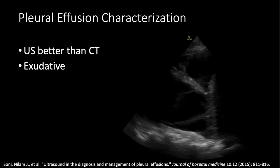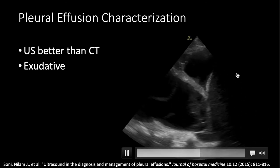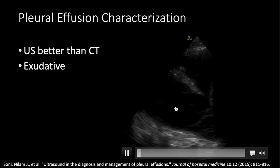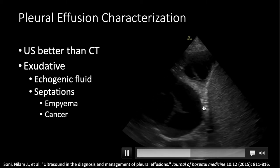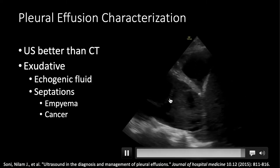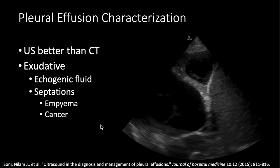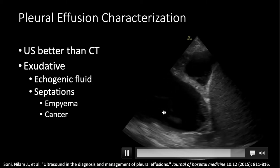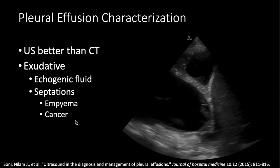Ultrasound is much better than CT at characterizing pleural effusions. Here we have a spine sign — something in the thoracic cavity is transmitting sound waves very well — and we can see echogenic fluid and septations. These thick septations, when you see them, indicate either empyema or cancer very often, definitely requiring a diagnostic thoracentesis. Ultrasound can see these septations much better than CT, whose slices may only be half a centimeter thick and can't resolve these fine structures most of the time.